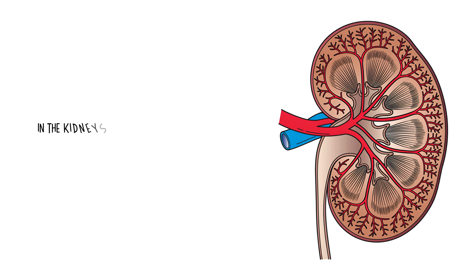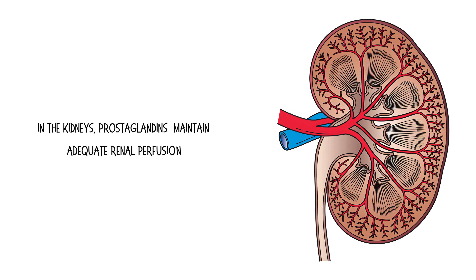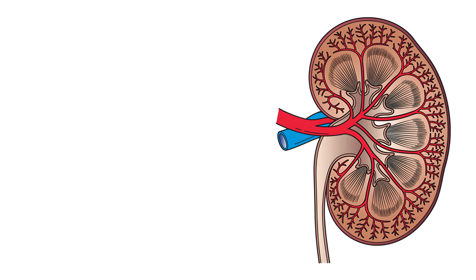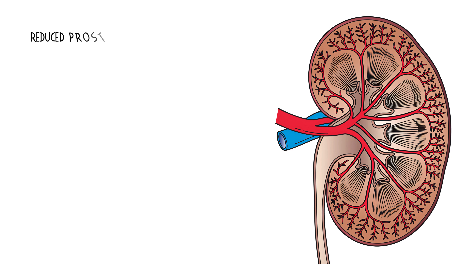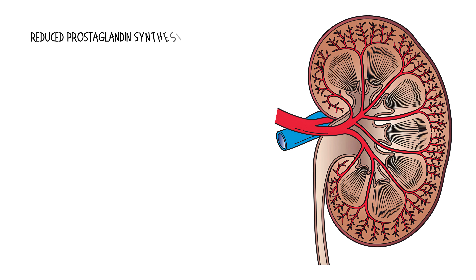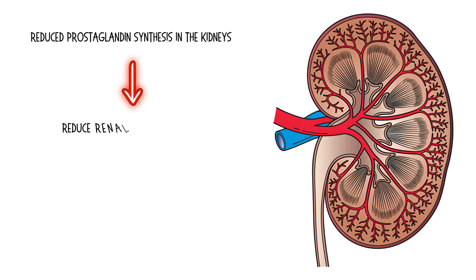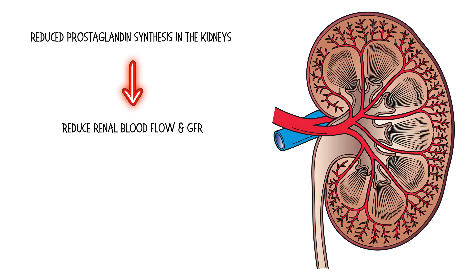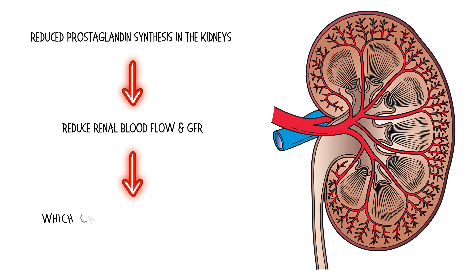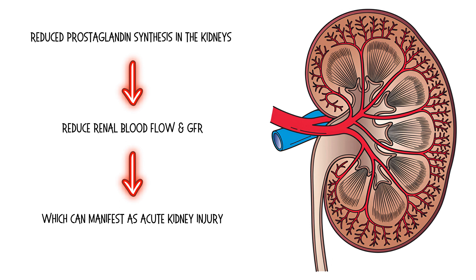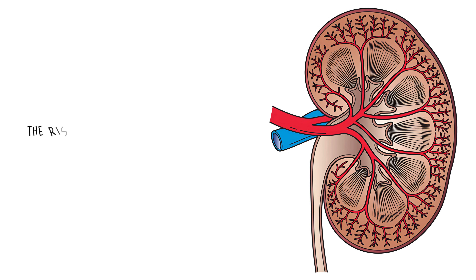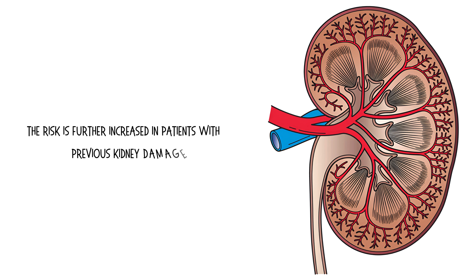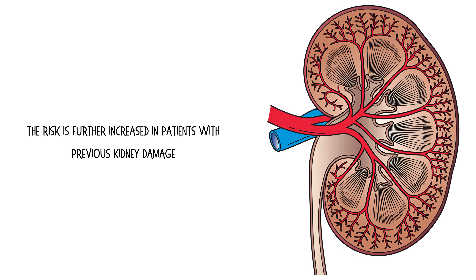In the kidneys, prostaglandins maintain adequate renal perfusion. Reduced prostaglandin synthesis in the kidneys may reduce renal blood flow and glomerular filtration rate, which can manifest as acute kidney injury. The risk is further increased in patients with previous kidney damage.